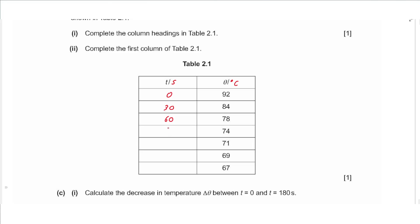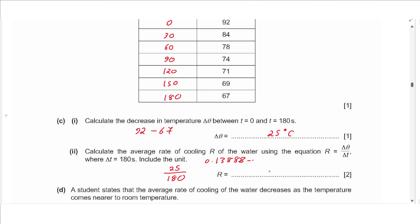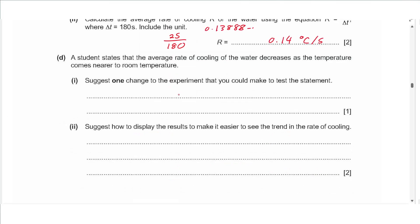Part c(i): calculate the decrease in temperature delta-theta between t equals zero and t equals 180 seconds. At zero it was 92°C and at 180 it was 67°C, so delta-theta equals 25 degrees Celsius. Part c(ii): calculate the average rate of cooling r using r equals delta-theta over delta-t, which is 25 divided by 180, giving 0.1389, approximated to 0.14 degrees Celsius per second to two significant figures.